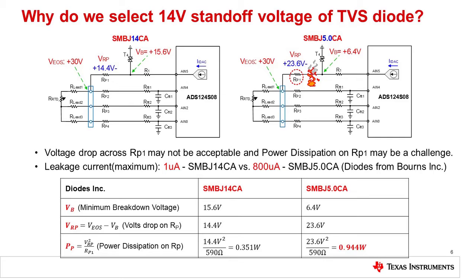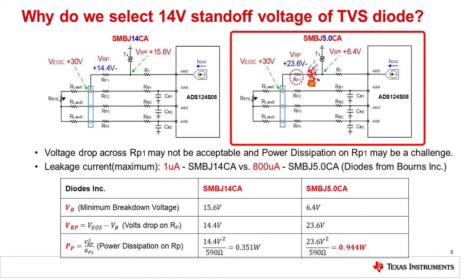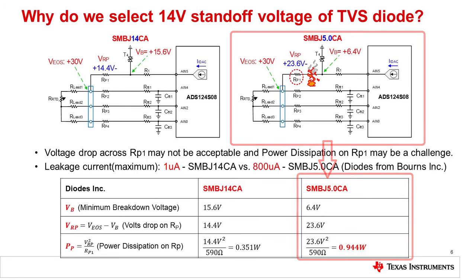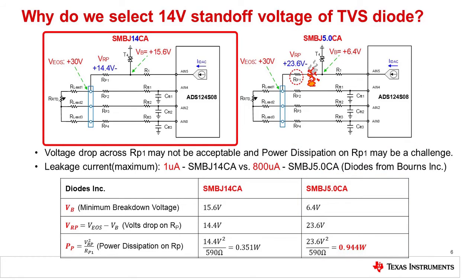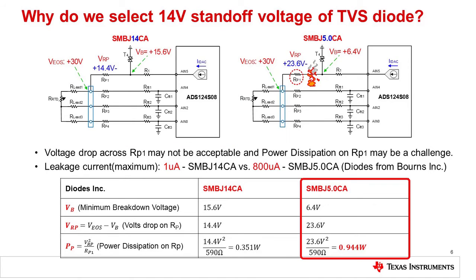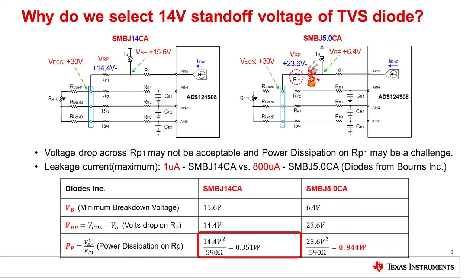Now let's cover a method for selecting the TVS standoff voltage. The absolute maximum ratings for the input voltage on the ADS124S08 are only minus 0.3 volts to 5.5 volts, so it would seem that the natural choice would be a unidirectional TVS diode with a forward voltage of minus 0.7 volts and a reverse standoff voltage of 5 volts. The problem with this choice is that the power dissipation in the series resistors and TVS diode would be unreasonably high, so that the resistors would need to be very large and expensive. To avoid this issue, the TVS is selected as a bidirectional device with a 14 volt standoff. The calculation here shows the difference: the total power dissipation on RP1 is 0.351 watts for the 14 volt TVS diode and 0.944 watts for the 5 volt TVS diode.